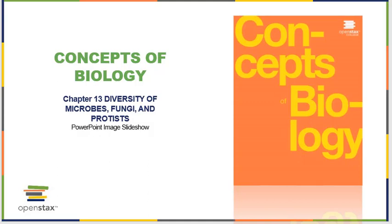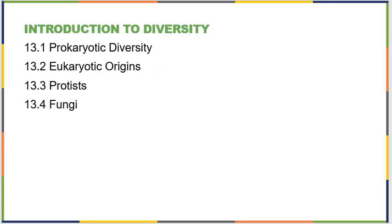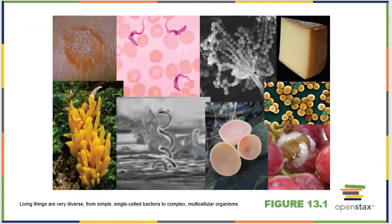Chapter 13: diversity of microbes, fungi, and protists. This chapter is broken up into four different sections. Prokaryotic diversity is by far the longest, eukaryotic origins is the shortest, and then we'll get some information on protists and different types of fungi.